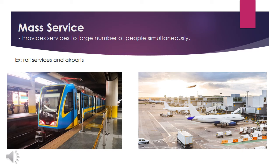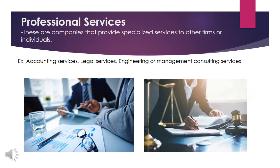Mass service provides services to a large number of people simultaneously. To serve many people, mass service companies offer a limited mix of services. Best examples are rail services, airports, and supermarkets. The last type under service processes is professional service. These are companies that provide specialized services to other firms or individuals. Best examples include accounting services, legal services, engineering, and management consultation services.